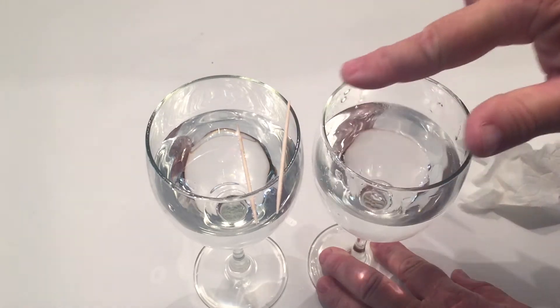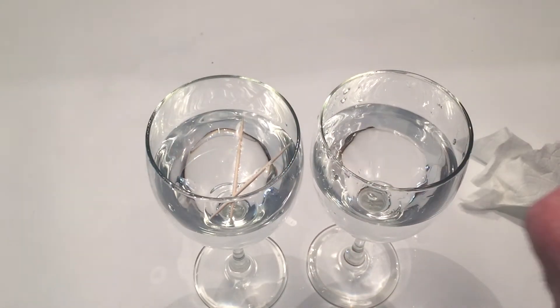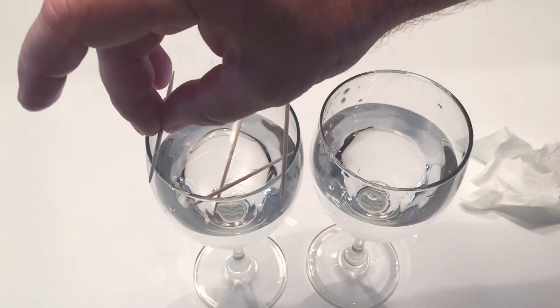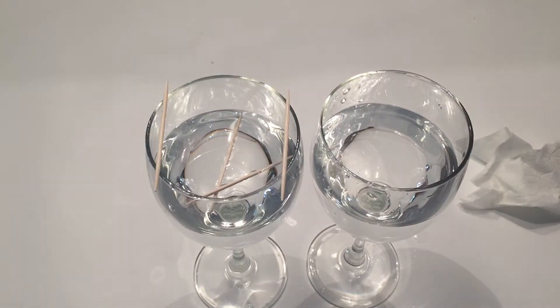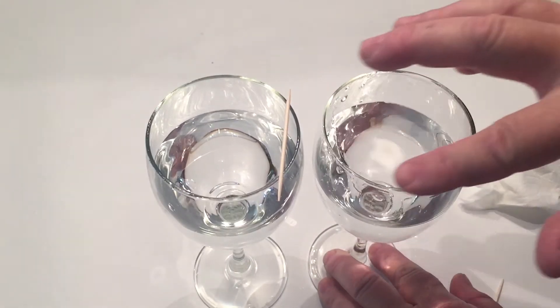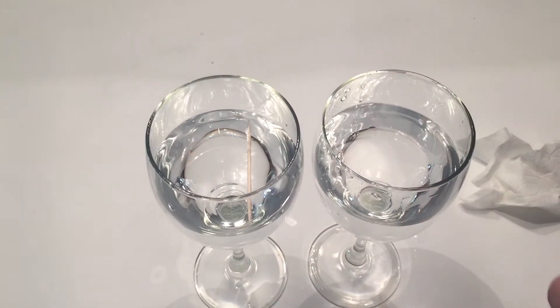The movement of the toothpick is caused by sympathetic vibration. Because you've made sure both glasses vibrate at the same exact frequency, the sound waves produced in the first glass travel in every direction. When those sound waves reach the second glass, the glass begins to vibrate as well and the toothpick moves.